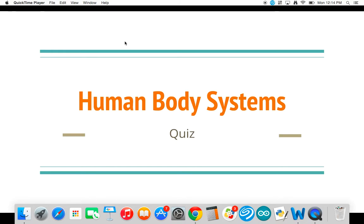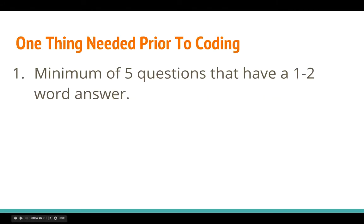This is the human body systems computer science component where we are going to be creating a quiz for your project. One thing you need to know prior to coding is that you need a minimum of five questions that have a one to two word answer. The reason is that Scratch is very particular when a user inputs data — it has to match up perfectly, and we don't want to spend so much time trying to get all the possible answers.